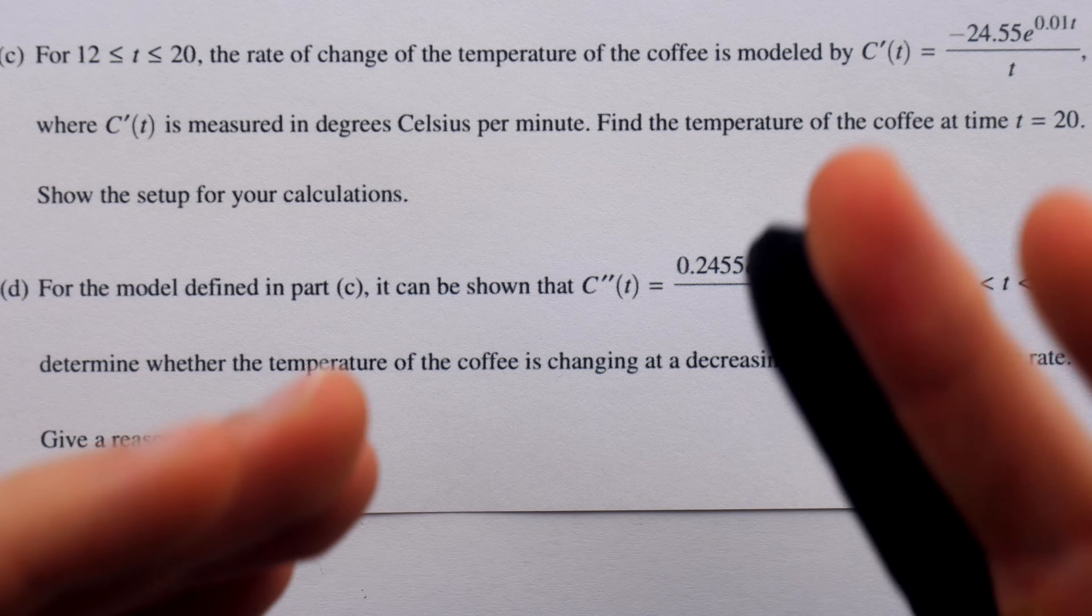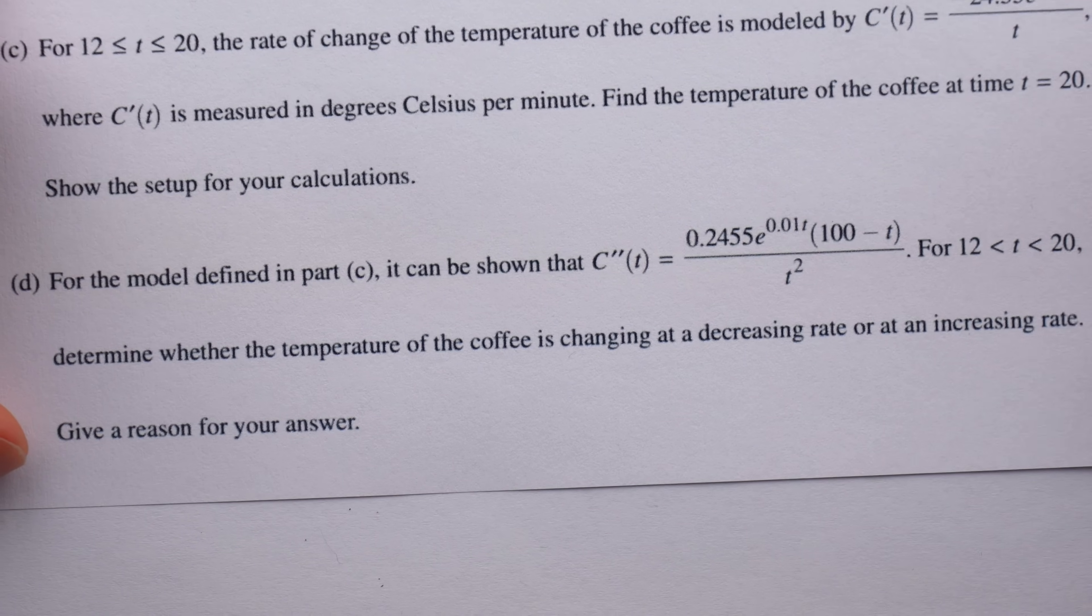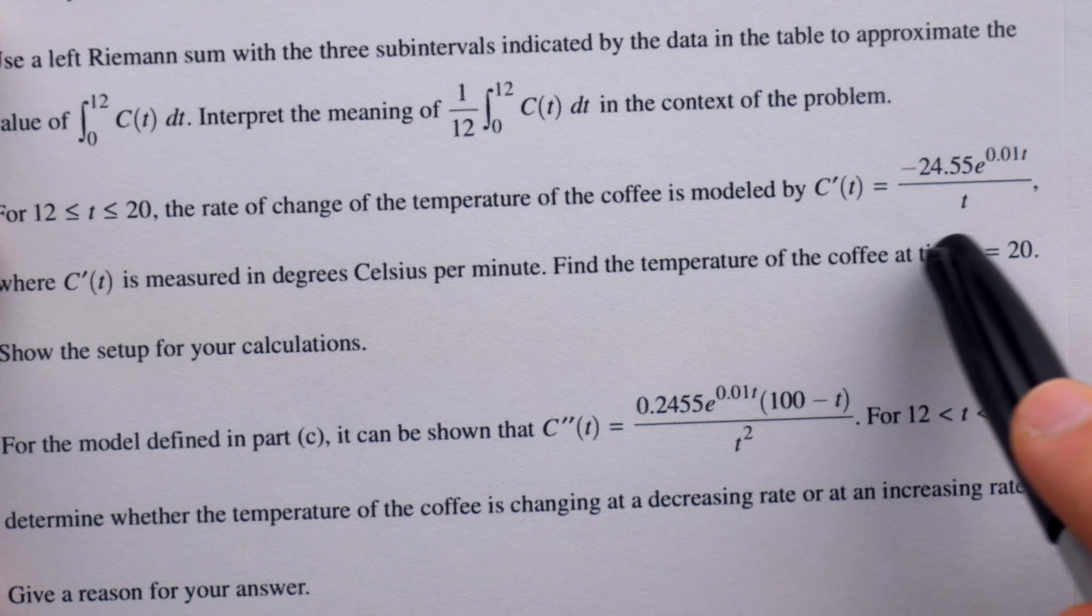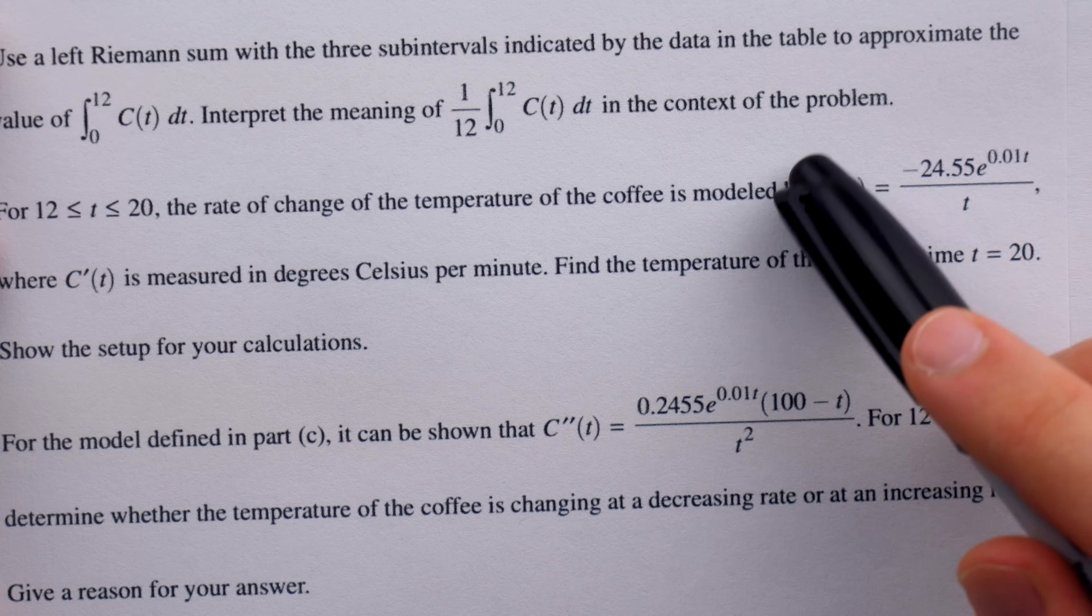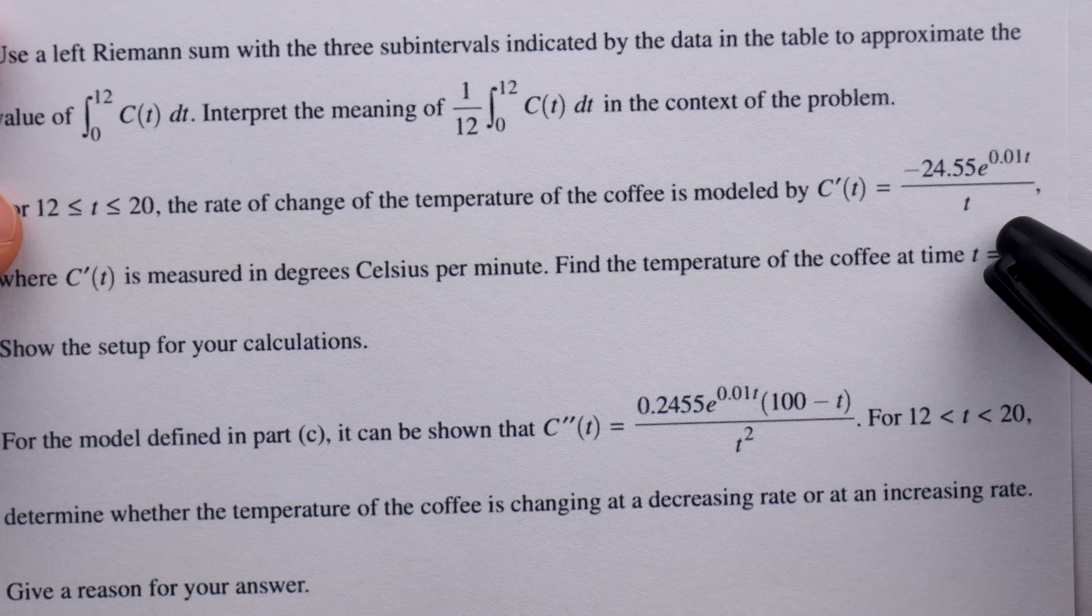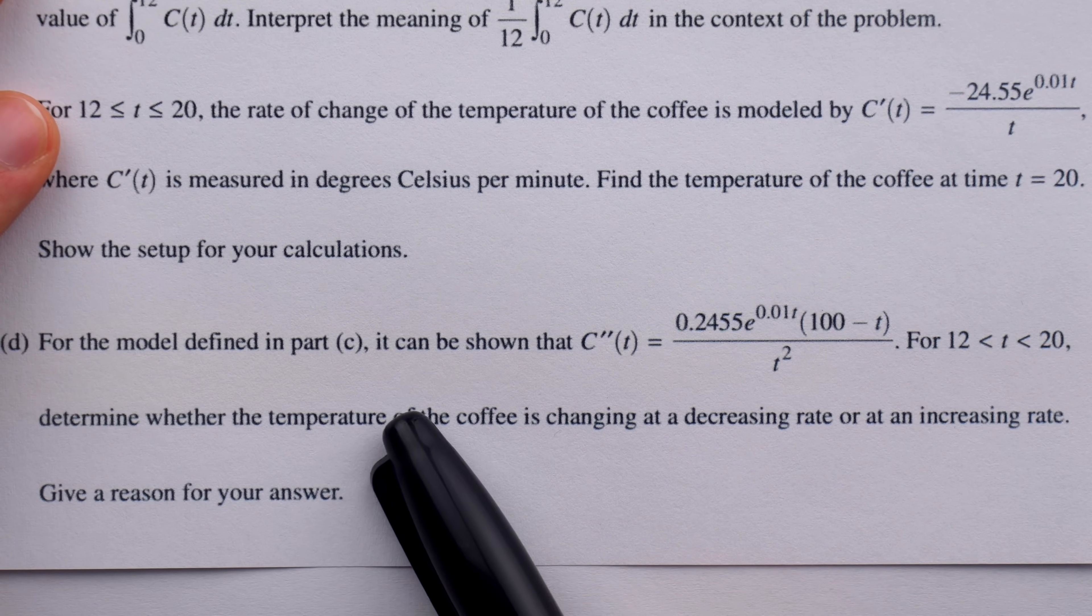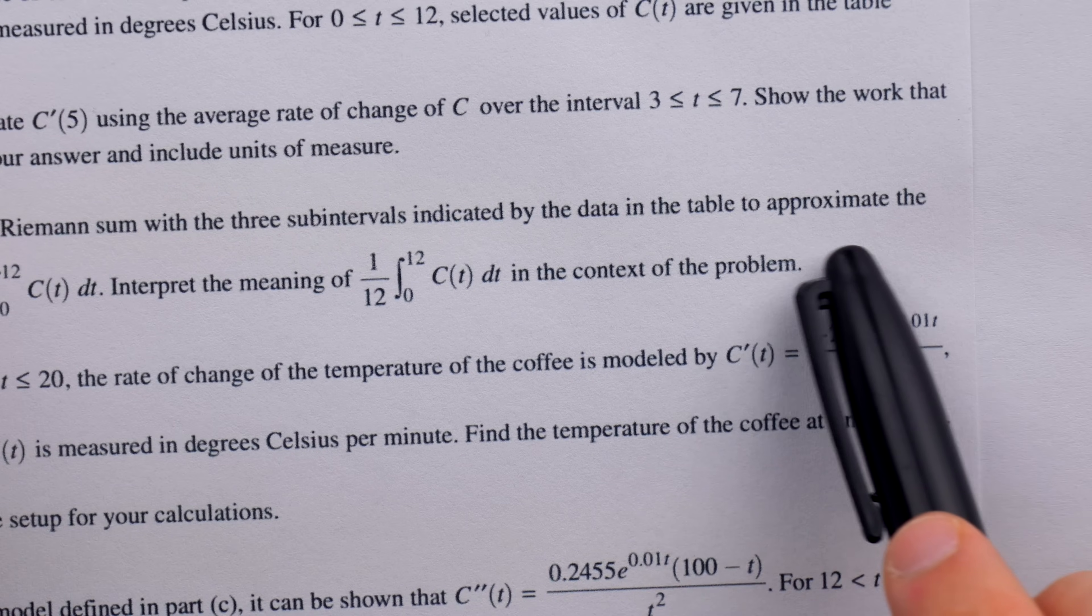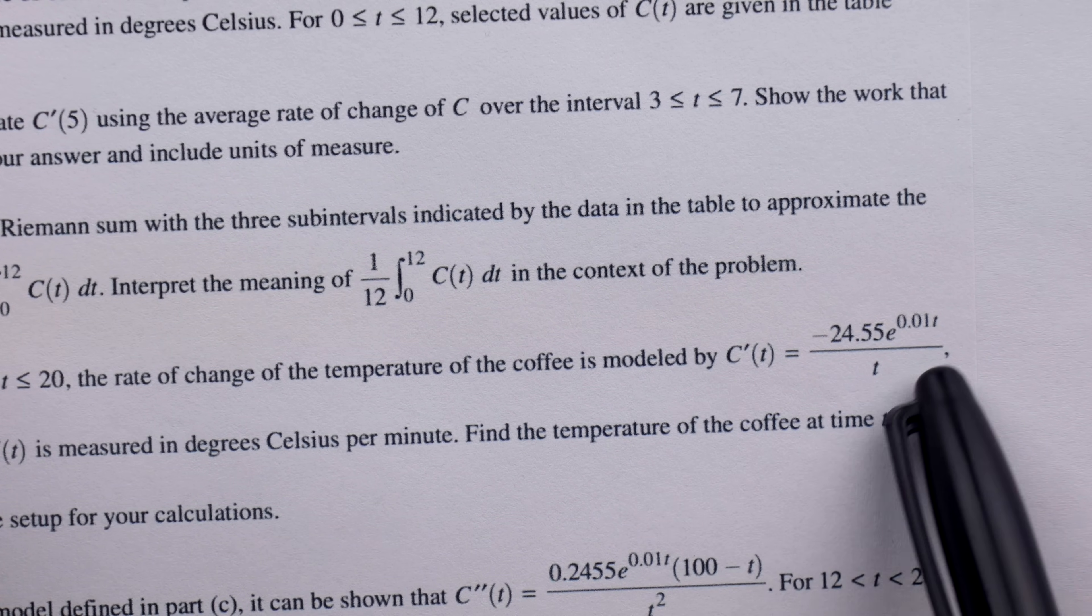So first, here's one simple way that some people misread this question. Understand, in the previous part that's referenced, Part C, we were already given the derivative of the temperature function. The derivative, roughly speaking, tells us the rate of change of the temperature of the coffee at a particular time. So some students saw that this says determine whether the temperature of the coffee is changing at a decreasing rate or at an increasing rate, and just looked back at that first derivative that was provided,